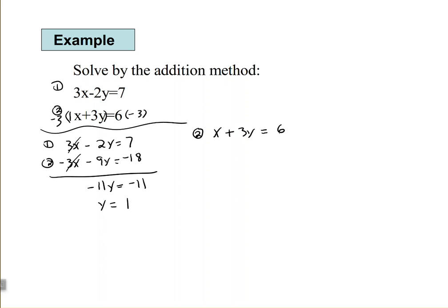So, we have x plus 3y equals 6, and I'm going to replace the y with 1 because we know that y is equal to 1. So, we find out by subtracting 3 from both sides that x is equal to 3.